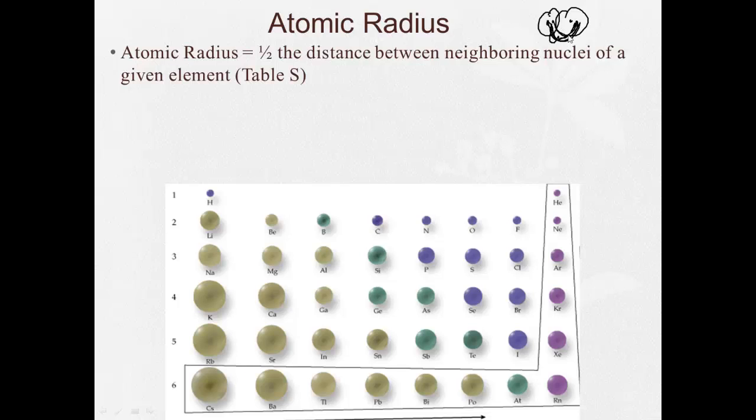This would be the distance between the nuclei and the atomic radius would be half of that, which is really, for our intents and purposes, just think of it as the radius of the sphere of the atom. And these are given to you on Table S in the reference tables.